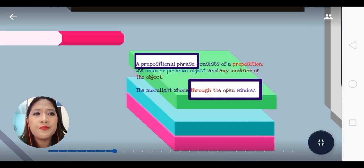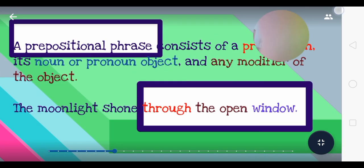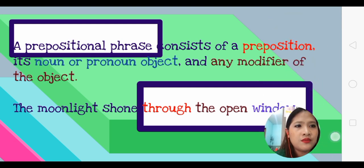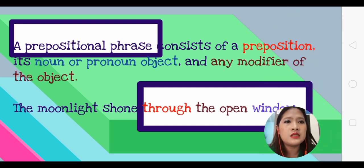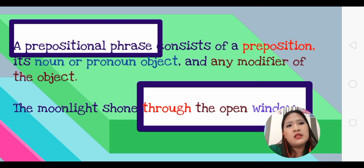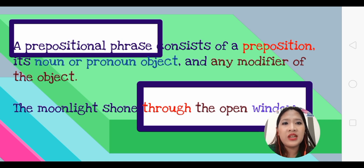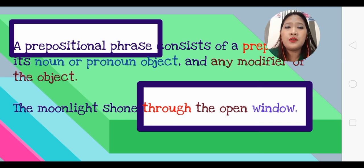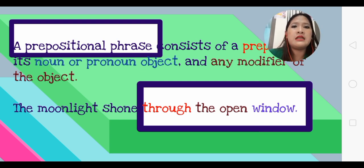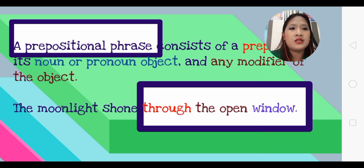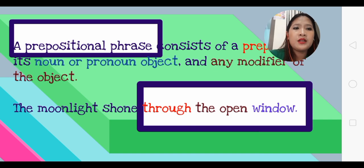Let's look into the concept of the prepositional phrase. A prepositional phrase consists of a preposition, its noun or pronoun object, and any modifiers. A prepositional phrase would not make sense without its object, and its object is either a noun or a pronoun. For example: 'The moonlight shone through the open window.' The preposition is 'through,' the object is 'window,' and 'the' and 'open' are two modifiers.